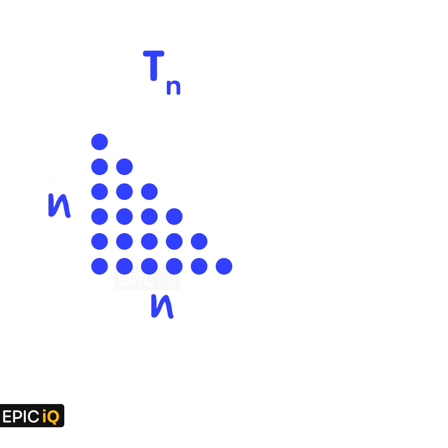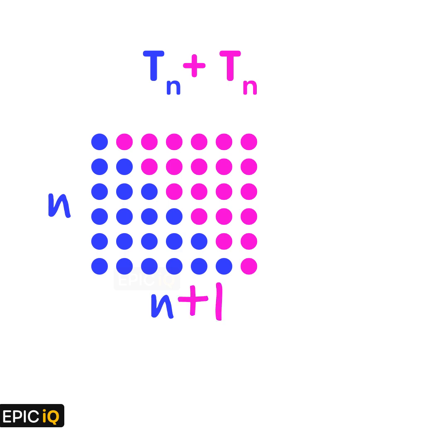You would notice that it now looks like a half square. We get creative again and create a duplicate of this arrangement of points. We rotate it and shift it to make a rectangular array of points. It looks like a square of size n, but you would notice that the base now has n plus 1 points.